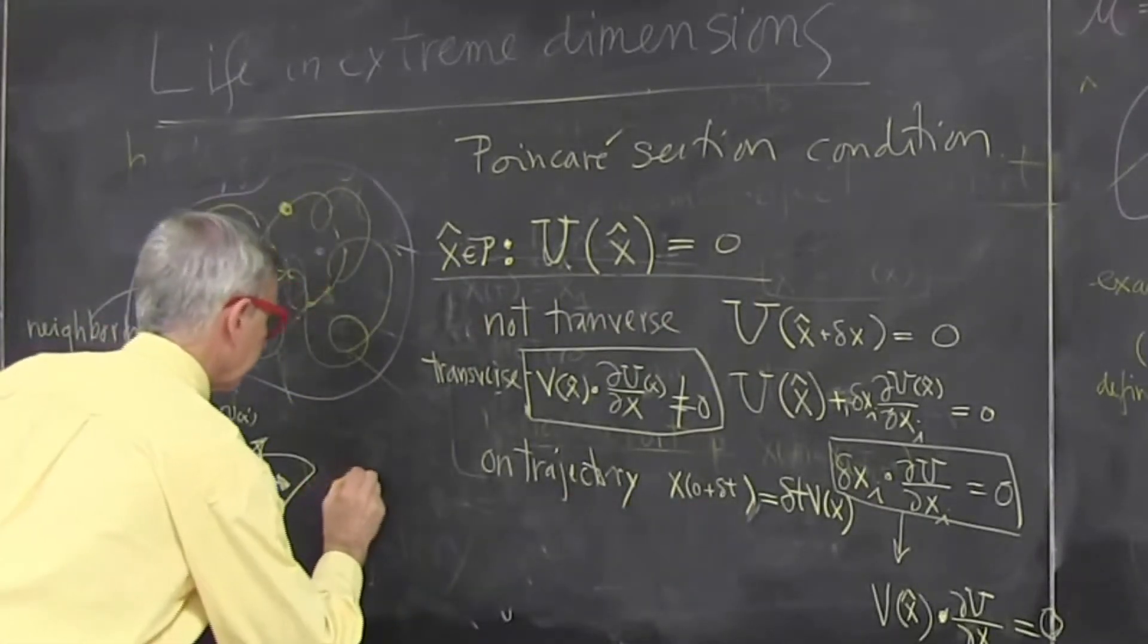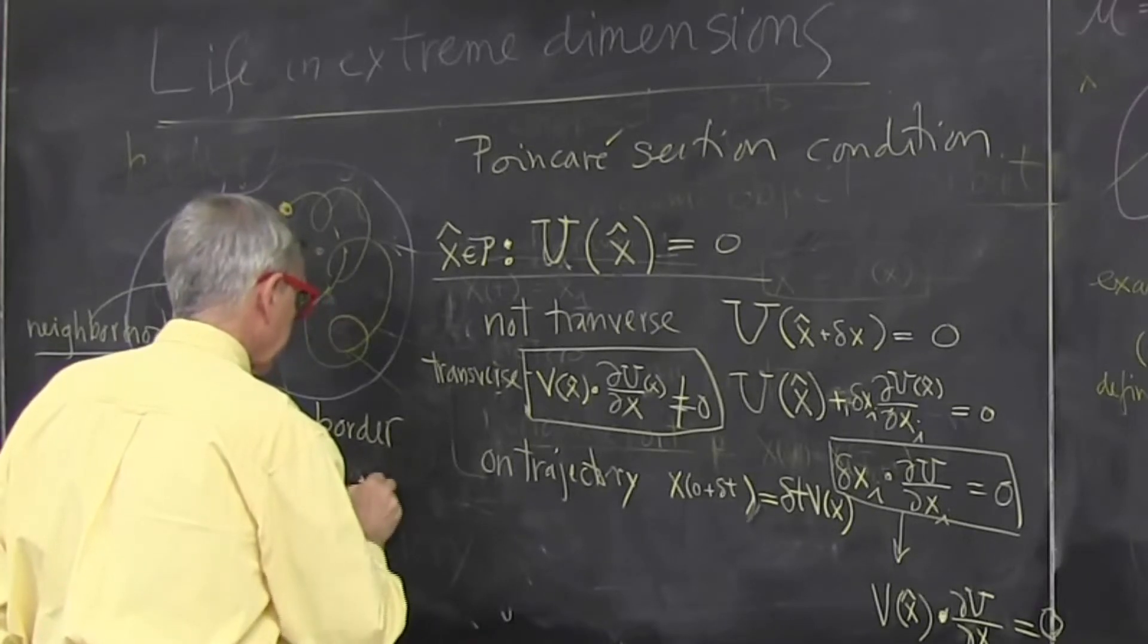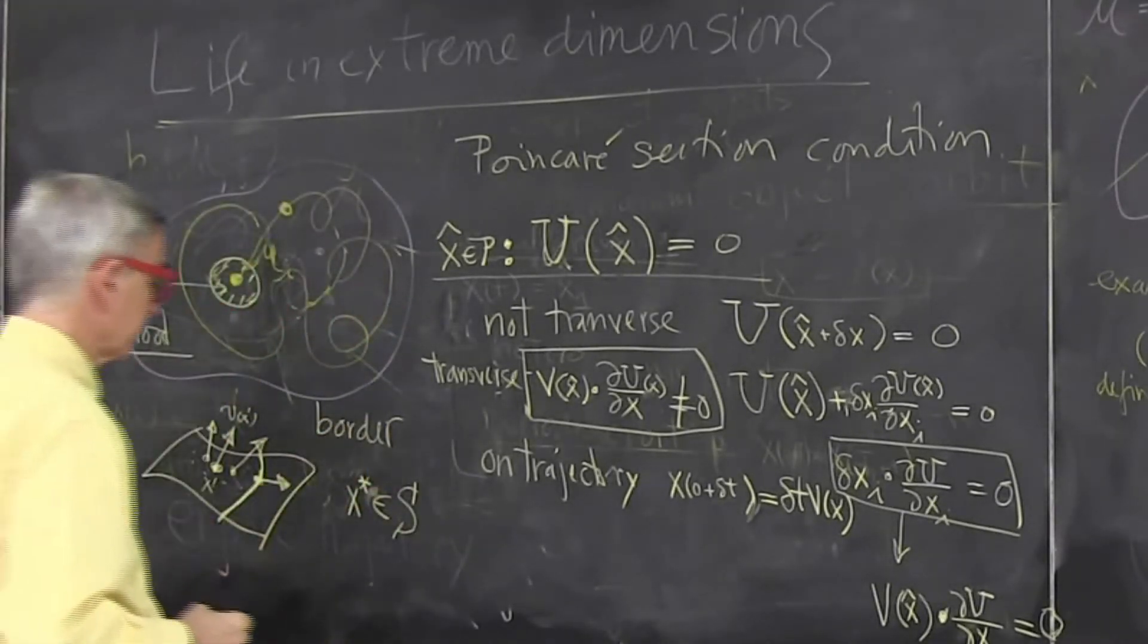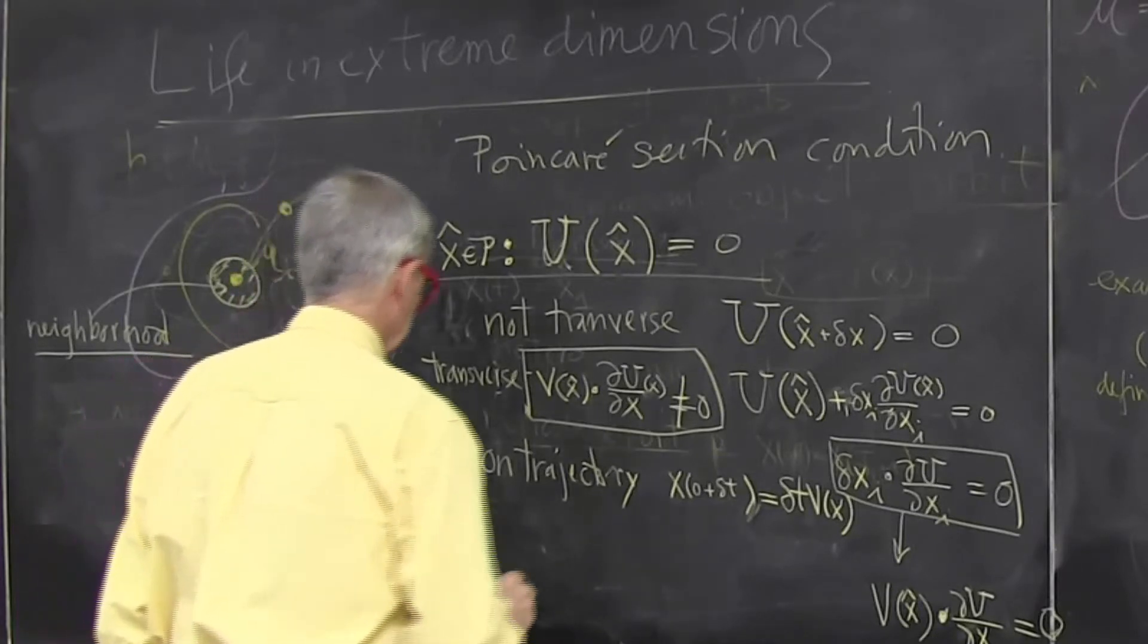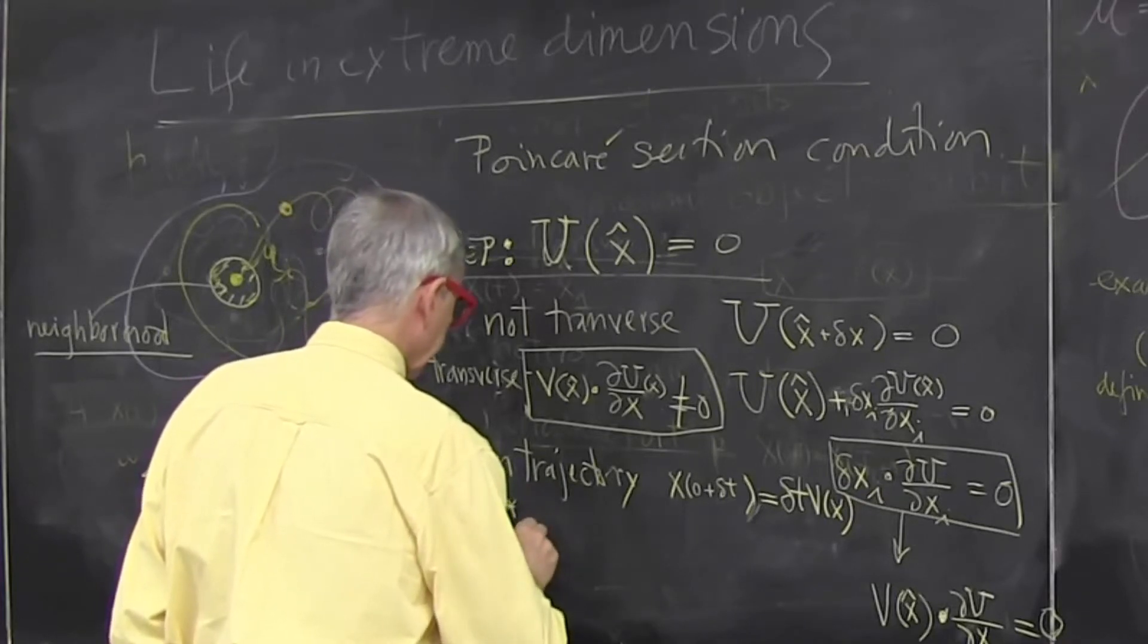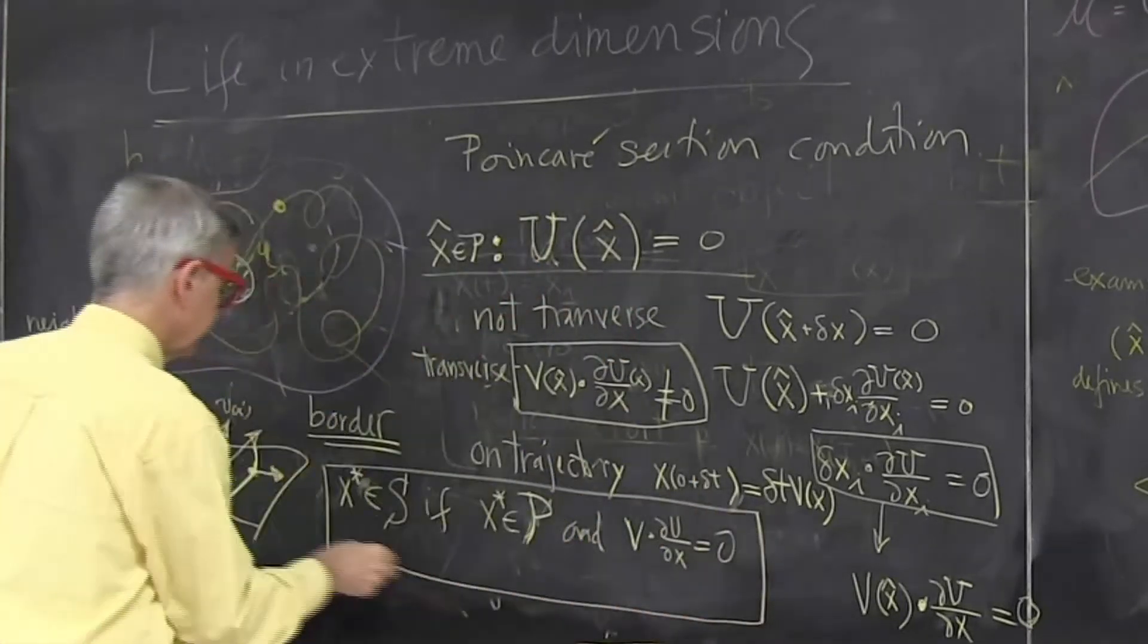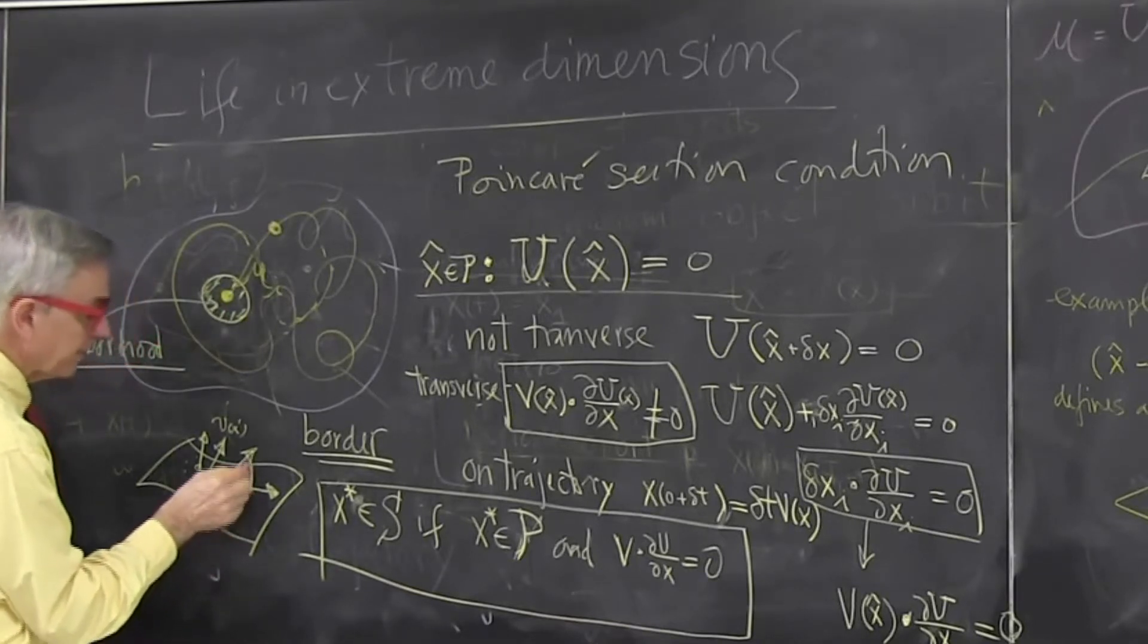Because what has happened? This condition made Poincaré section co-dimension one. Now we have a second condition, which defines the border. So there is a set as the point, let's call it star, is in the border, which is 100,000 dimensions minus 2, if x star is in a Poincaré section, and it's not transverse to it.